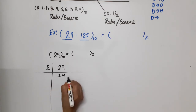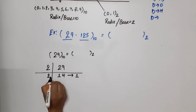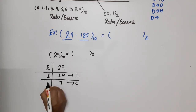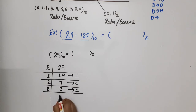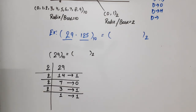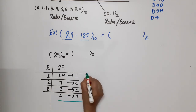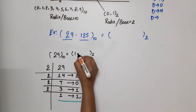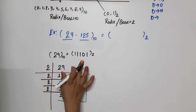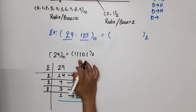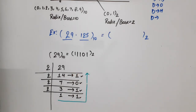Dividing 29 by 2: 29 ÷ 2 = 14 remainder 1. Then 14 ÷ 2 = 7 remainder 0. Then 7 ÷ 2 = 3 remainder 1. Then 3 ÷ 2 = 1 remainder 1. Since 1 is less than 2 we stop. Now read the remainders from down to upward to get the binary equivalent: 11101.